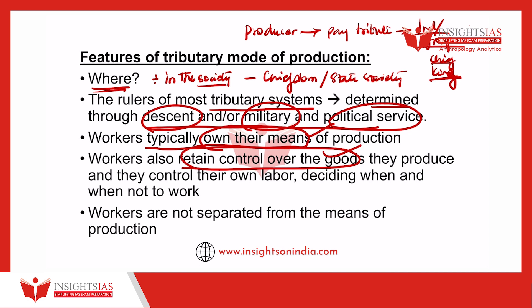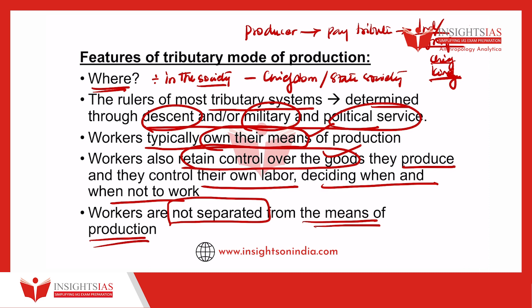Workers own their means of production and retain control over the goods they produce. They control their own labor and decide when and when not to work. Another important feature of tributary mode of production is that the workers cannot be separated from the means of production — they own their land or have free access to hunting and foraging grounds. Workers are part of their own land and their economic activity; you cannot remove them from their economic activities.